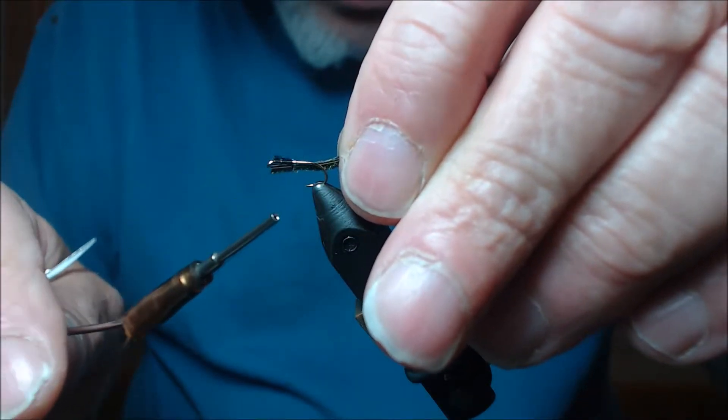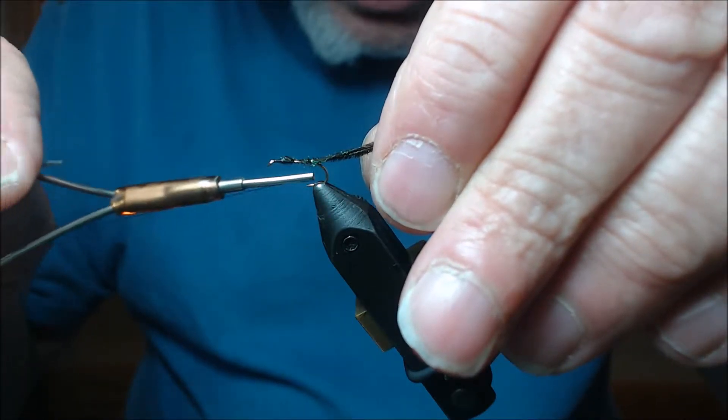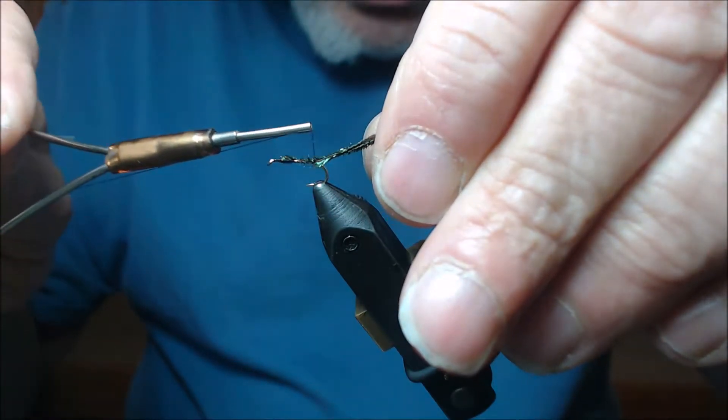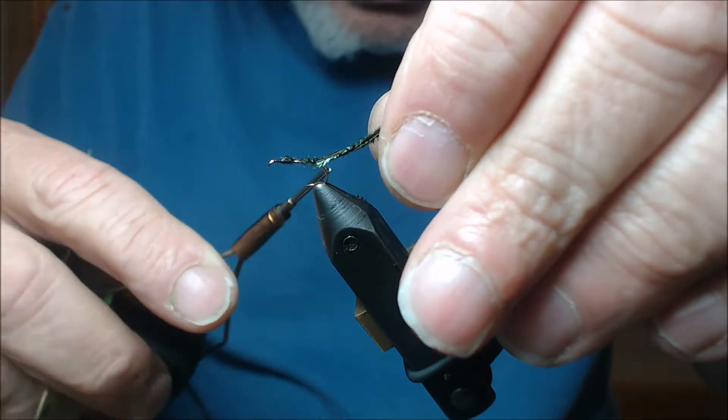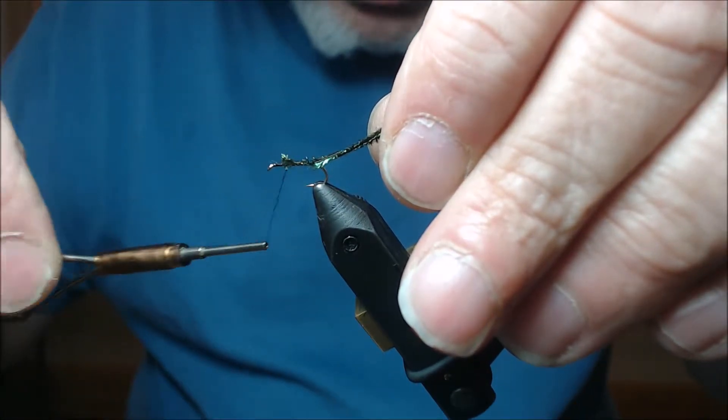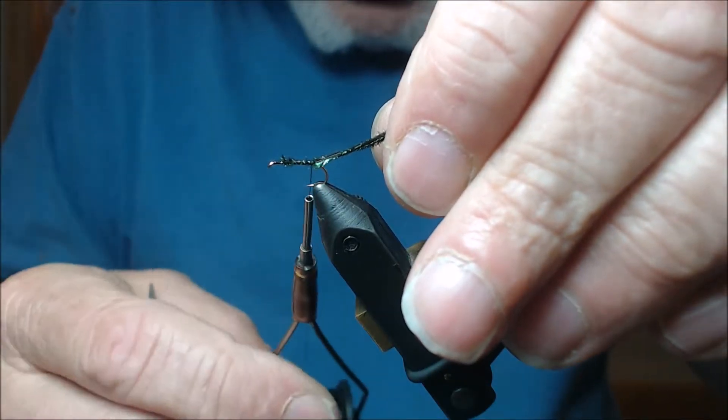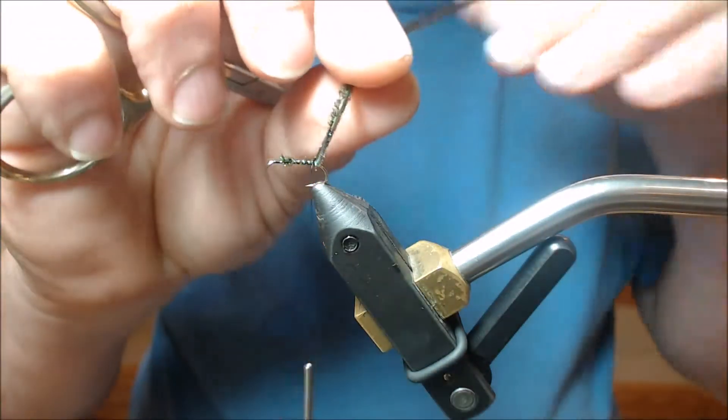I'm going to start with some loose wraps, wrapping all the way back candy cane style, not touching, to the beginning of the bend which is at the hook barb. I'm now going to wrap forward and lock it all in. And then one more time wrap back, thus making sure that everything stays where it needs to be.